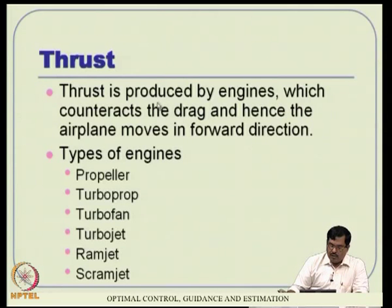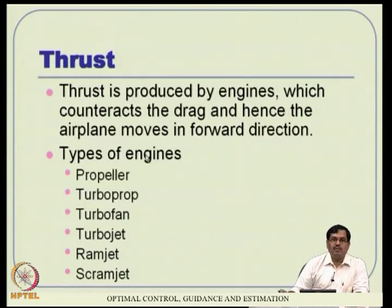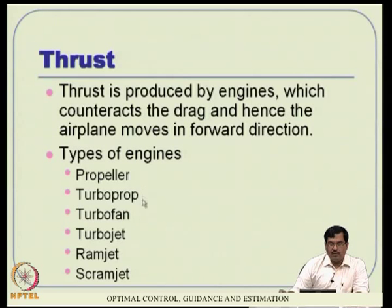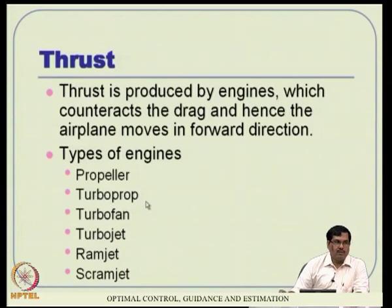Coming to thrust force - we talked about weight versus lift and drag versus thrust. Thrust generation happens through a variety of ways using an engine. It can happen through a propeller, turbo prop, turbo fan, turbo jet, ramjet, scramjet, and other varieties. What we really need in control system design is a thrust generation mechanism. To a limited extent, the thrust generation can also provide control force by manipulating both the magnitude and direction of thrust - this is called thrust vectoring in fighter aircraft.